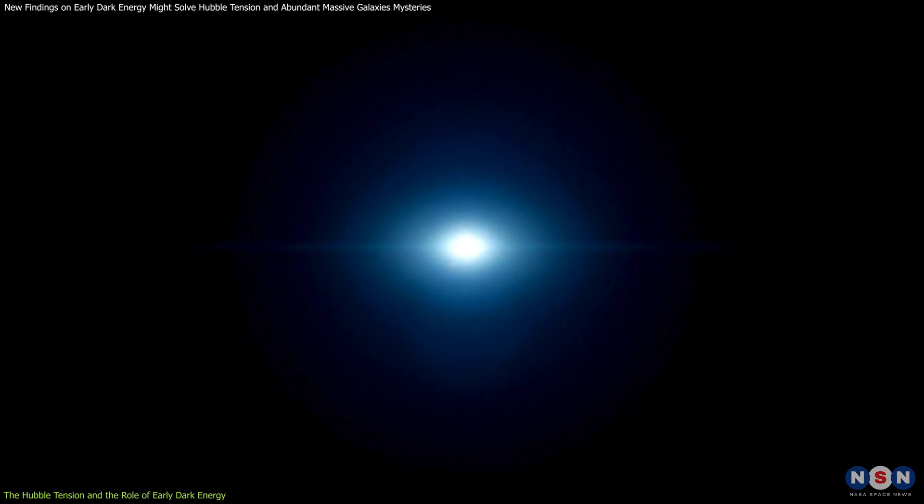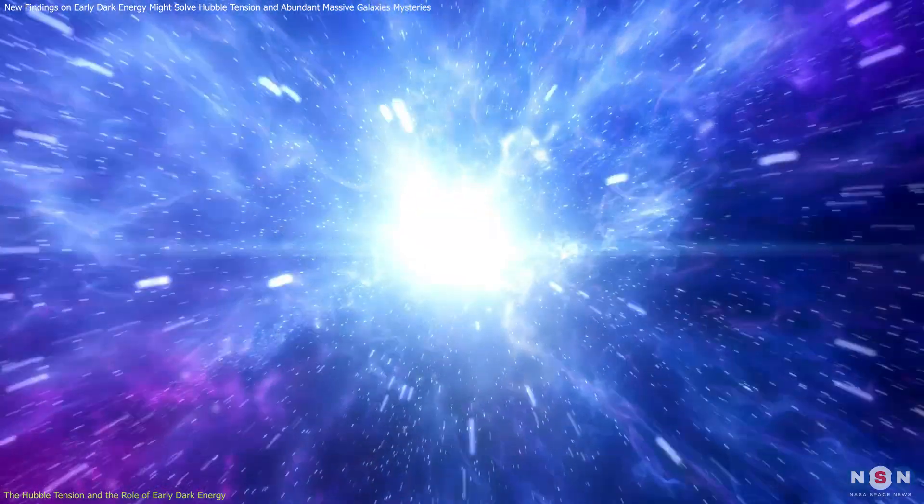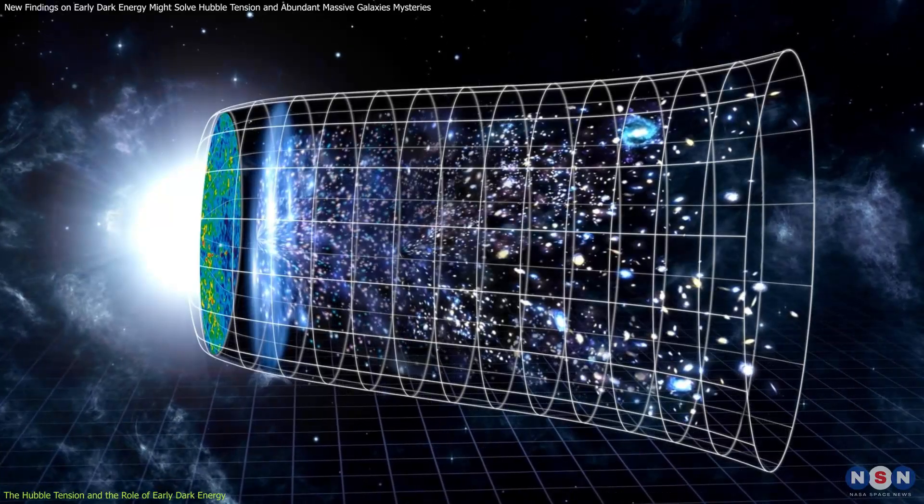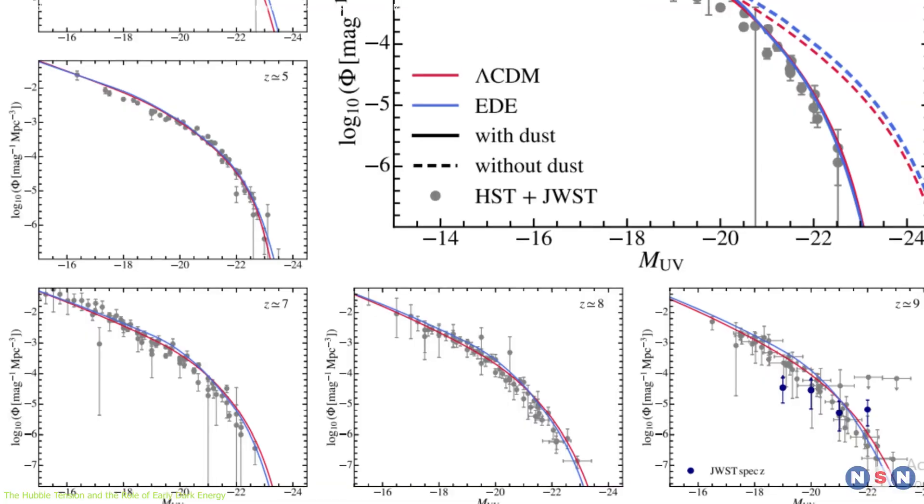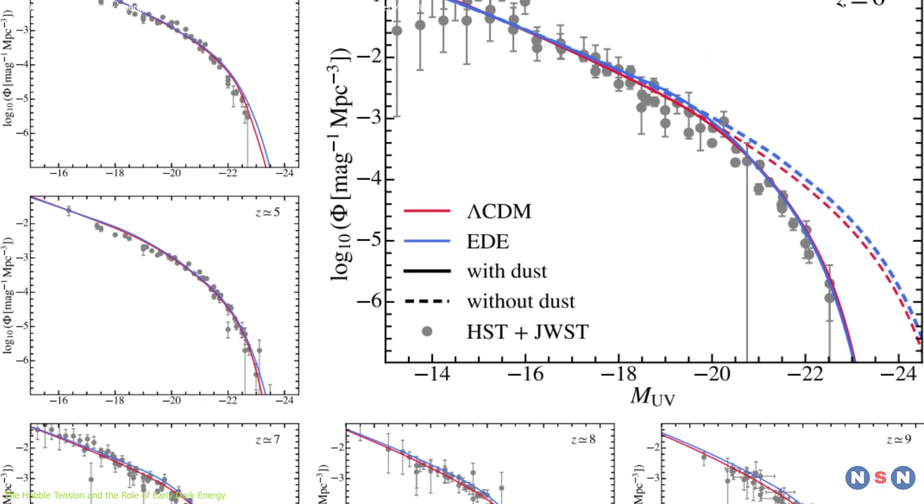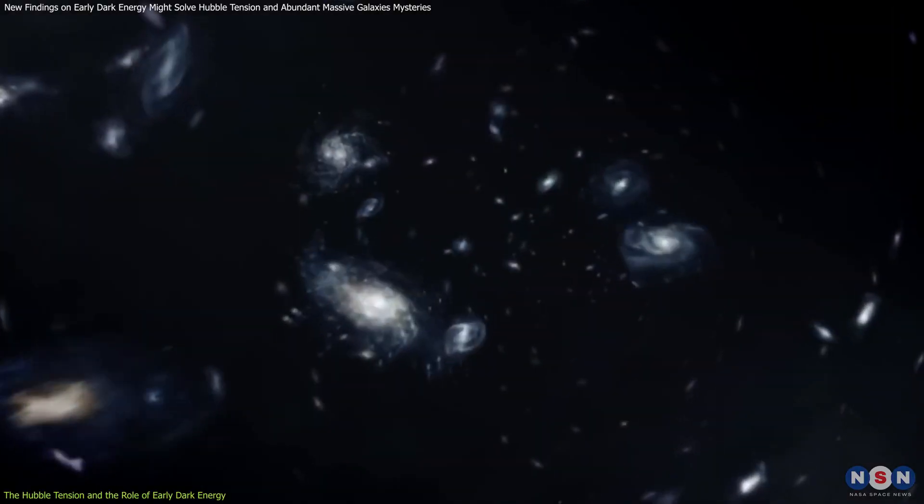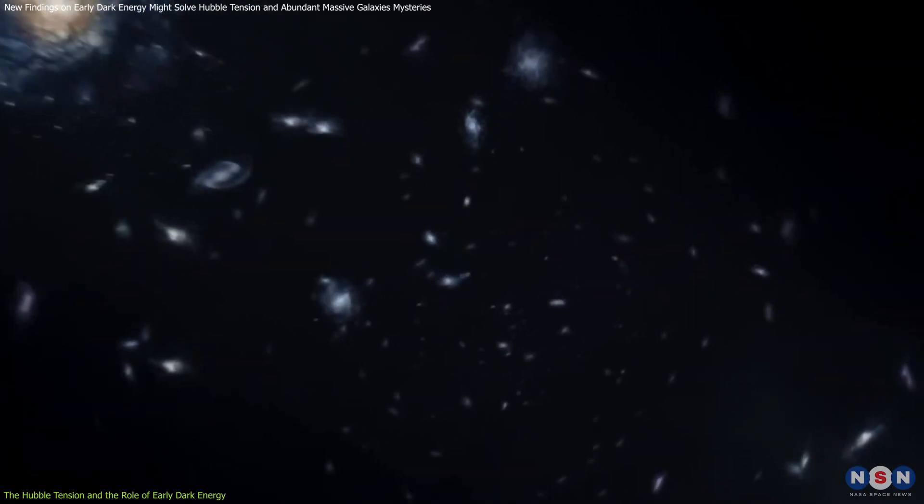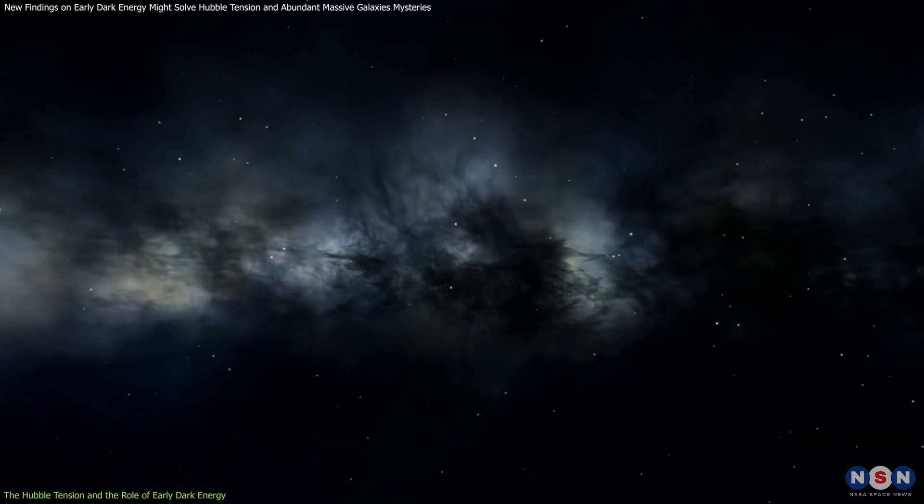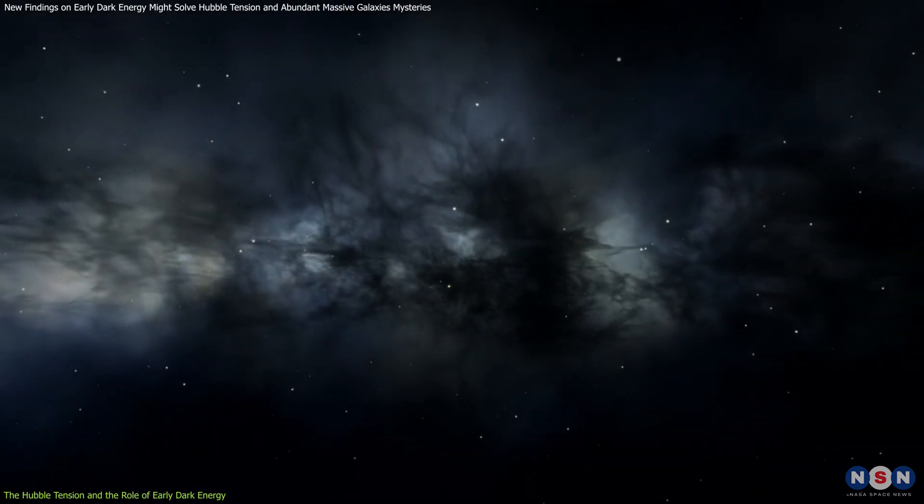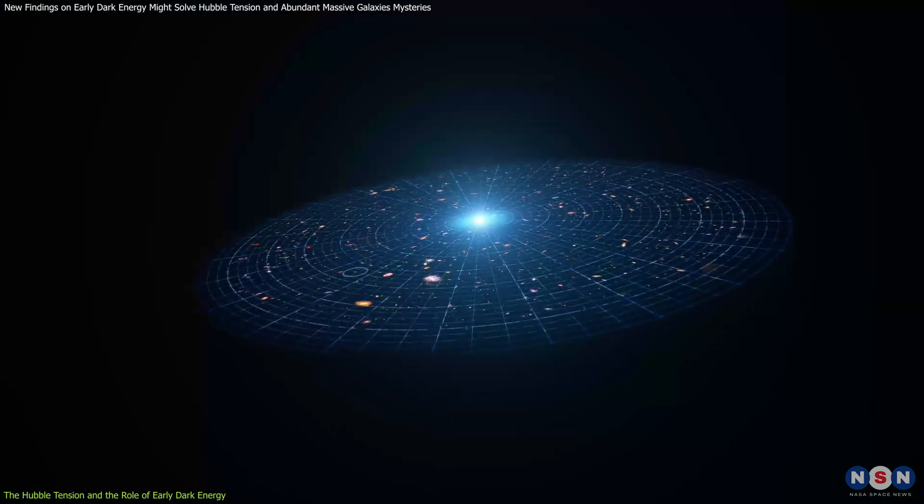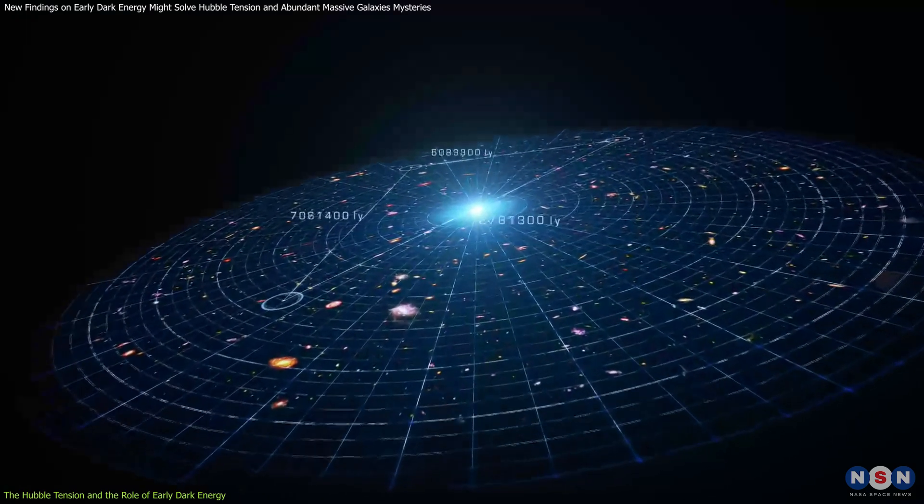The evidence for early dark energy comes from its potential to resolve this Hubble tension. By incorporating EDE into cosmological models, researchers found that it could increase the inferred expansion rate of the universe at early times, aligning it more closely with the higher expansion rates observed in the local universe. In simpler terms, early dark energy might be the missing ingredient that makes the different measurements of the universe's expansion rate agree with each other.